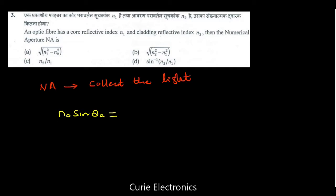So n0 sin theta a equals square root of n1 square minus n2 square. This is the numerical aperture equation NA.